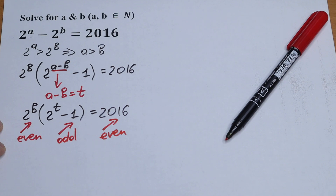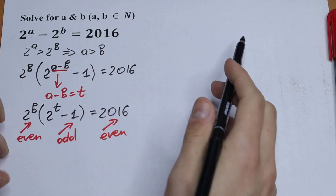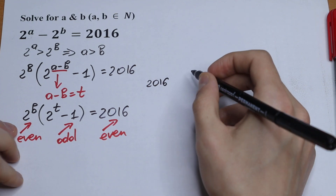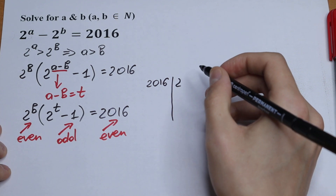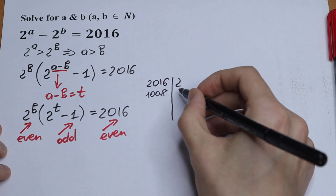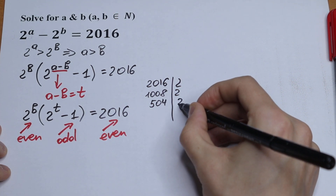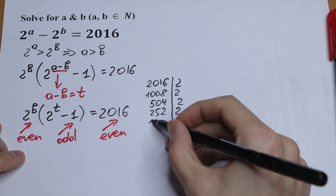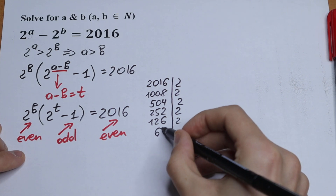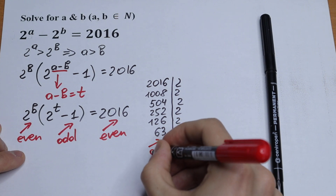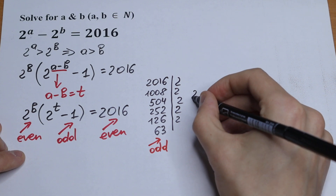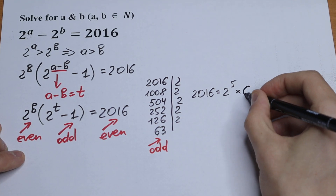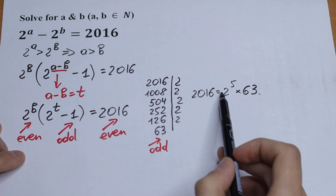So what are we going to do? Let's write 2016 as an even number times an odd number. We divide 2016 by 2 to get 1008, divide again to get 504, then 252, then 126, then 63. Since 63 is odd, we can express 2016 as 2 to the fifth power times 63.